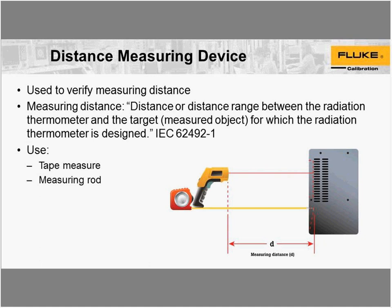For your calibration, you need a distance measuring device to verify measuring distance. Some IR thermometers tend to be more reliant on measuring distance than others. If you have the IR thermometer too close to the target you may have problems, and too far away you start losing your field of view on your thermal radiation source. These devices are dependent on the so-called calibration geometry — measuring distance: the distance or distance range between the radiation thermometer and the target measured object for which the radiation thermometer is designed.